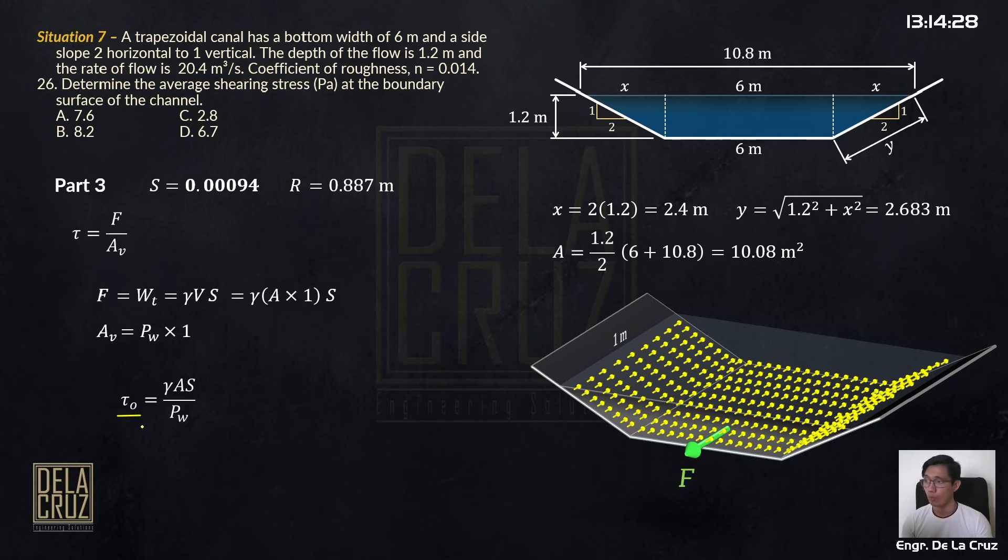Let's call it tau naught, because this is how it's written in books. So you have here the force as gamma area times S. Our A over P is wetted perimeter. The 1 meter will just cancel. And that's familiar. The A over wetted perimeter is the hydraulic radius, right? So the formula, boundary shearing stress is gamma R S. You may memorize that one. You don't need to derive it. We just saw the derivation.